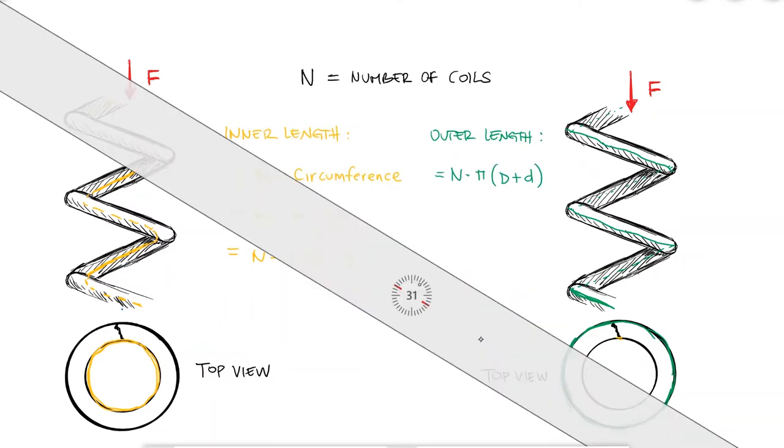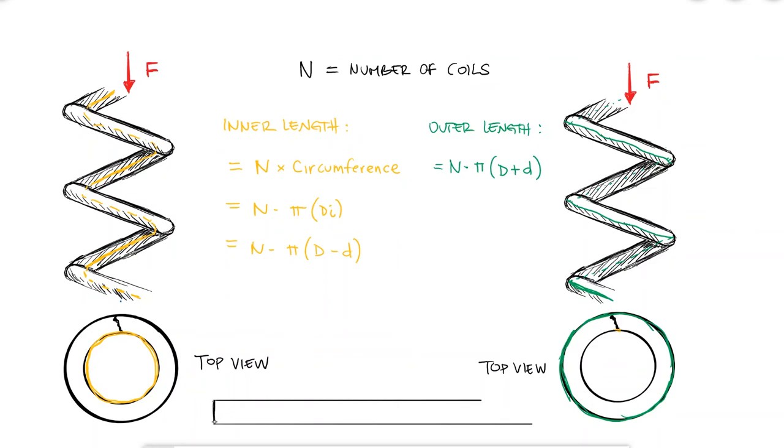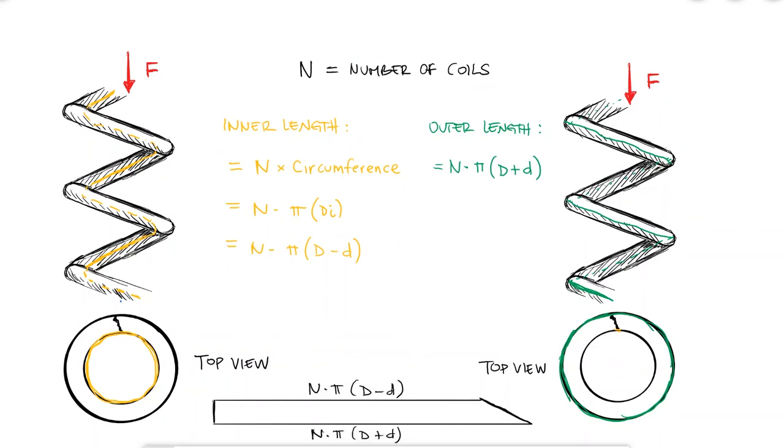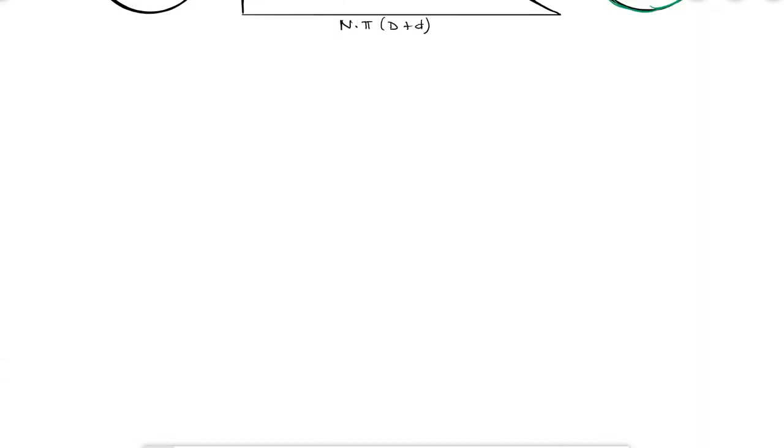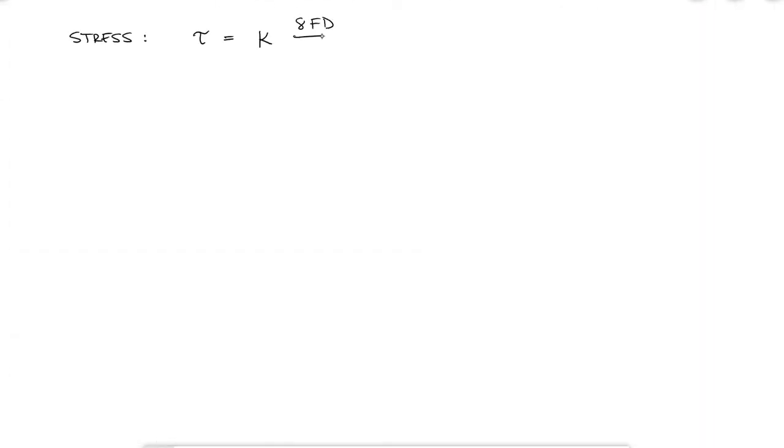If we were to straighten this wire, we would see that one side is way longer than the other. Because accounting for this as a straight wire would not be straightforward, we use a k factor that corrects for both curvature as well as the direct shear term.